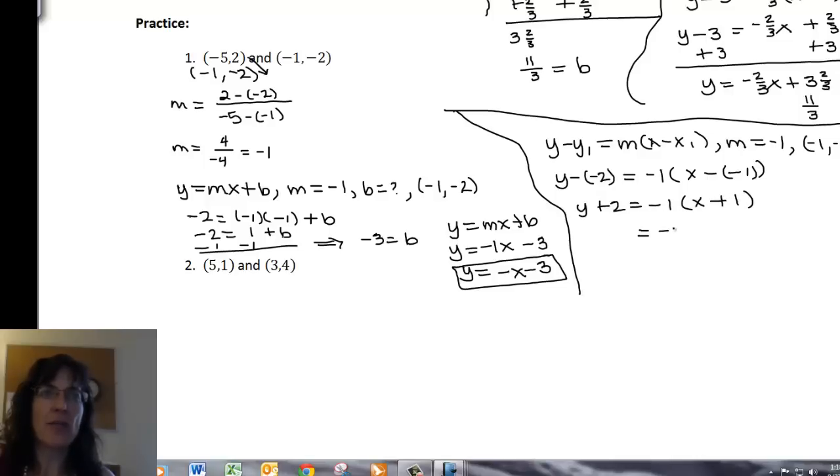Distribute that negative, so I have negative x minus 1, and y plus 2. So I'll subtract 2 from both sides, and I end up with y equals negative x minus 3, just like I did with the other method.